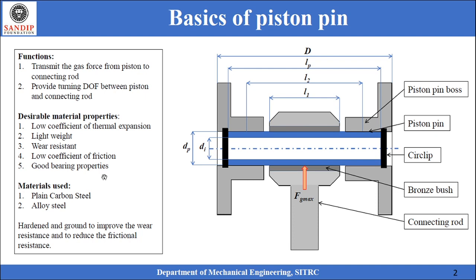The materials typically used are plain carbon steel and alloy steel. Since the piston pin must withstand the rubbing action against the small end of the connecting rod, piston pins are hardened and ground to improve wear resistance and to reduce frictional resistance respectively.